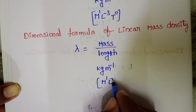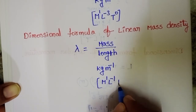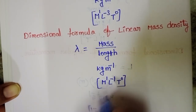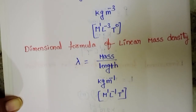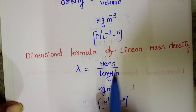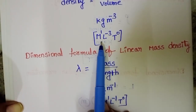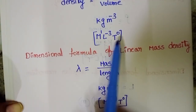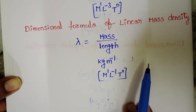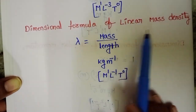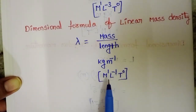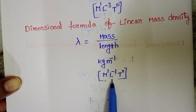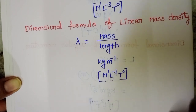The dimensional formula of linear mass density is M power 1, L power minus 1, T power 0. To summarize: the dimensional formula of density is M power 1, L power minus 3, T power 0, and the dimensional formula of linear mass density is M power 1, L power minus 1, T power 0.